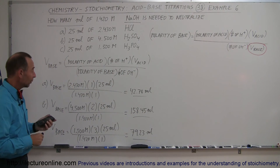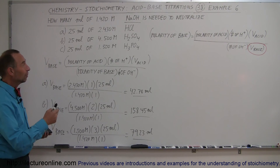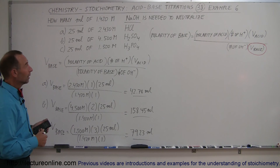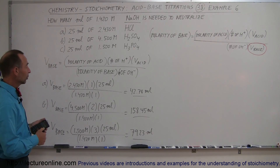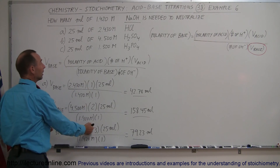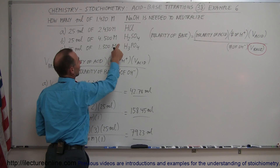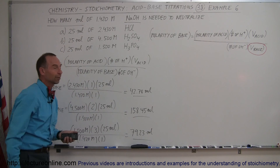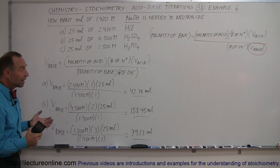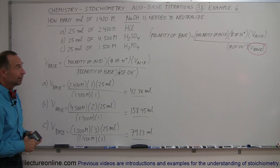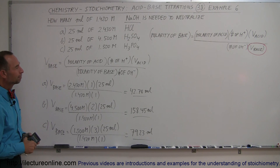Notice how the equation is affected by an acid or base that has more than one ion produced per molecule — in this case 1, 2, and 3 for hydrochloric acid, sulfuric acid, and phosphoric acid respectively. That's how you do that. By now this should be pretty clear, and hopefully you can do your homework on this topic.